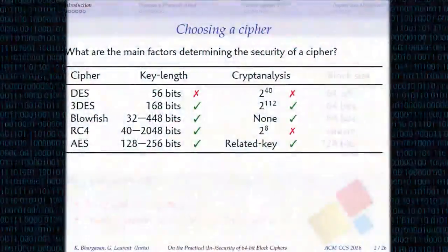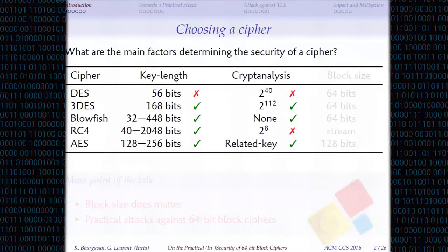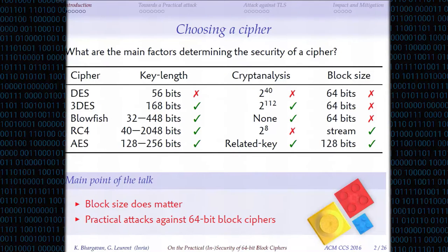There's another consideration that is sometimes overlooked, and that's the block size when you have a block cipher. In particular, if you look at Blowfish and Triple-DES, they have a block size of only 64 bits. And it turns out that this is insufficient — that's really the point of this talk. I'm going to talk about block ciphers with a small block size and show that you shouldn't use Triple-DES or Blowfish because the block size is too small.